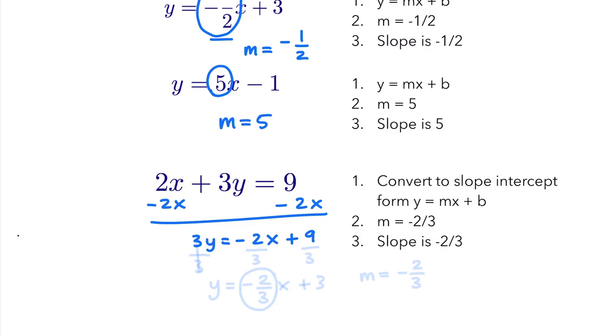Then to get y by itself, we're going to divide by three to every term, and we'll get y equals negative two-thirds x plus three.